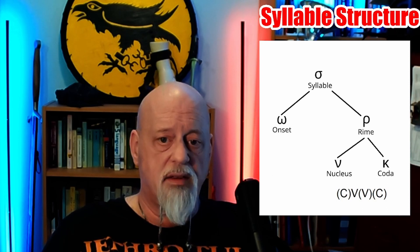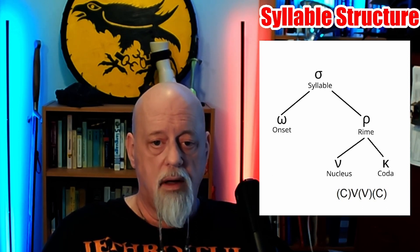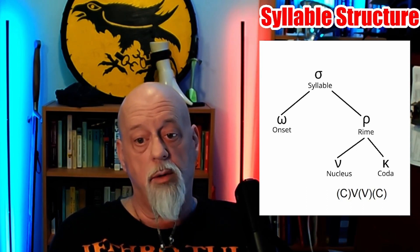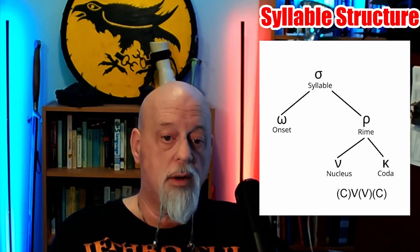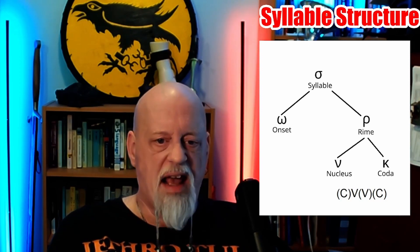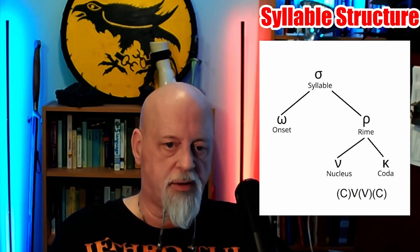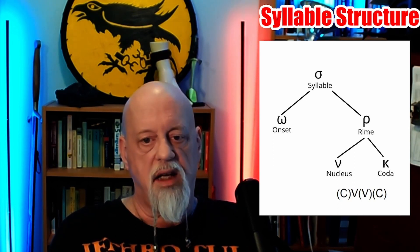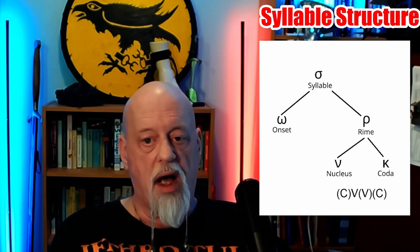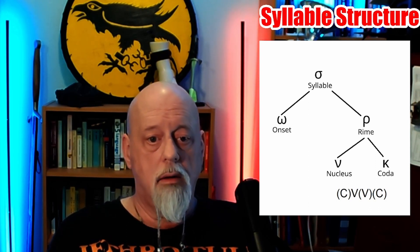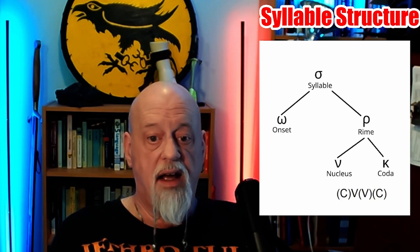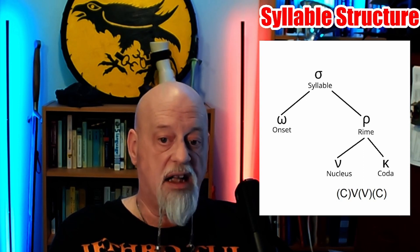In linguistics, a syllable consists of an onset followed by a rhyme, and the rhyme is broken down into two subcategories: the nucleus and the coda. The onset is a consonant at the start of a syllable. The nucleus is the vowel in the syllable, and the coda is whatever comes after the vowel. For the English word 'cat,' C is the onset, A is the nucleus, and the final T is the coda.